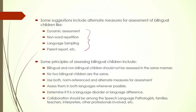Keeping all of these things in mind, there are suggestions now coming up to tackle this problem. One is dynamic assessment — not sticking to the prescribed set of assessment tools. Non-word repetition is a very common task used for assessing language disorder in children, and there are suggestions that non-word repetitions could be utilized along with language sampling, parent report, etc. Some principles of assessing bilingual children include new suggestions: bilingual and non-bilingual children should not be assessed in the same manner — right now they are assessed the same way. Individual differences need to be kept in mind. Norm-reference and alternate measures of assessment are being proposed, including differentiating between language disorder and language difference.